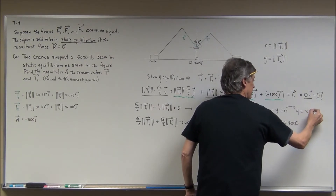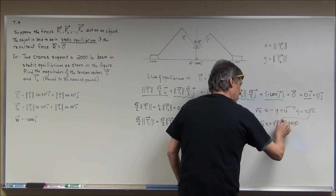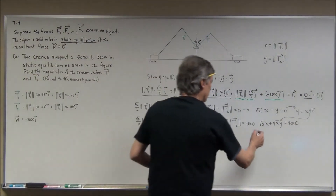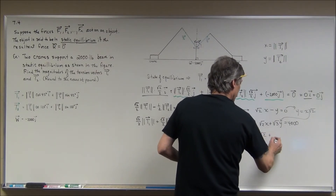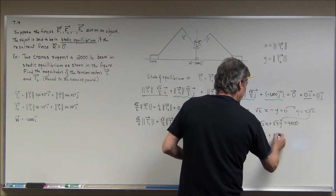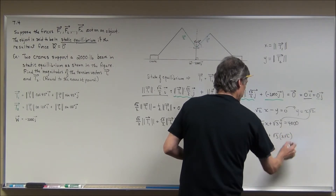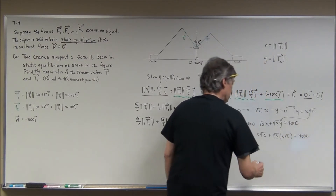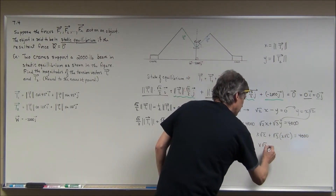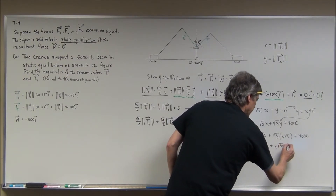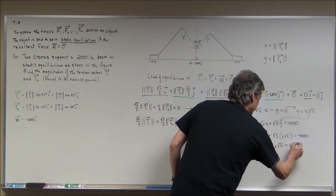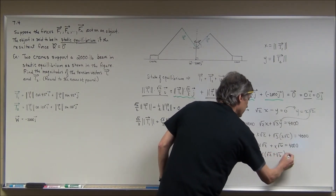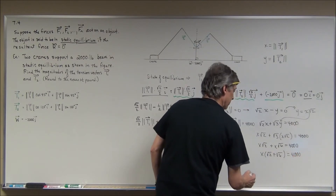I get y equals x times the square root of 2. Let's plug that in — as messy as it's going to look, I'm just using substitution. I now have x times the square root of 2 plus the square root of 3 times x times the square root of 2, which equals 4,000. So x times the square root of 2 plus x times the square root of 6 equals 4,000. I'm going to factor out the x — this is some weird, wild stuff — and then divide through.